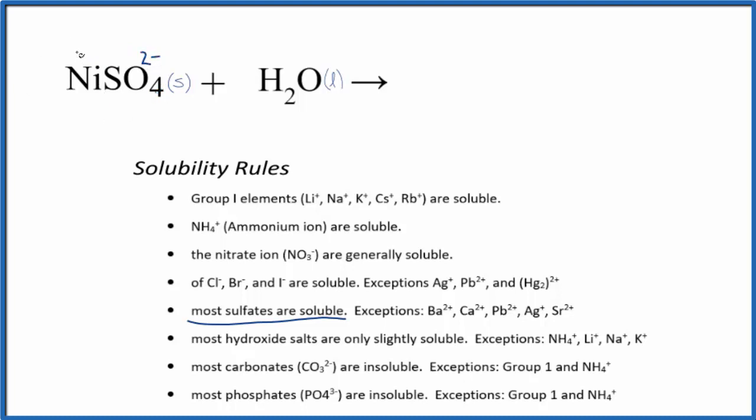So the nickel, that has to be 2 plus. So we'll have our nickel-2 ion, the Ni2 plus, and then we'll have the sulfate ion, SO4, 2 minus. And because these are dissolved in water, we want to write a little AQ after them.